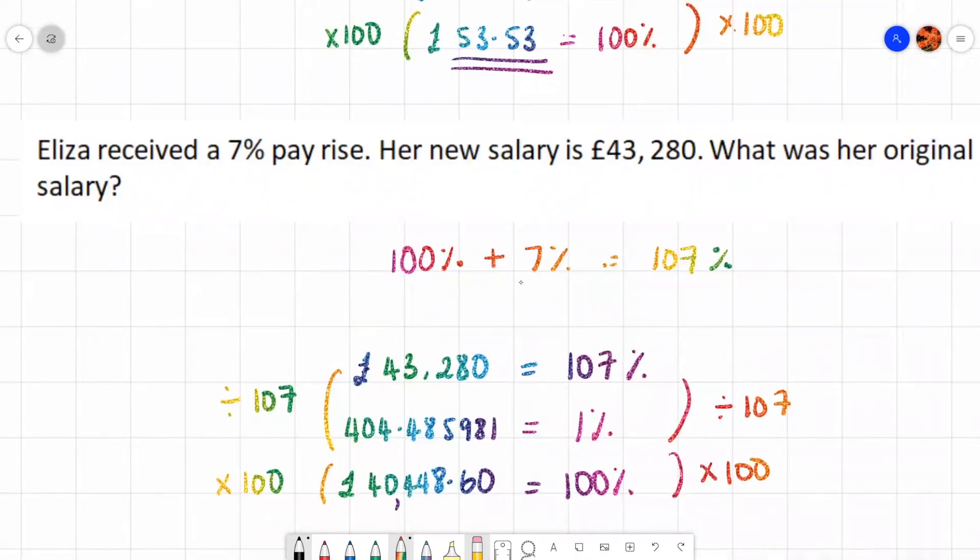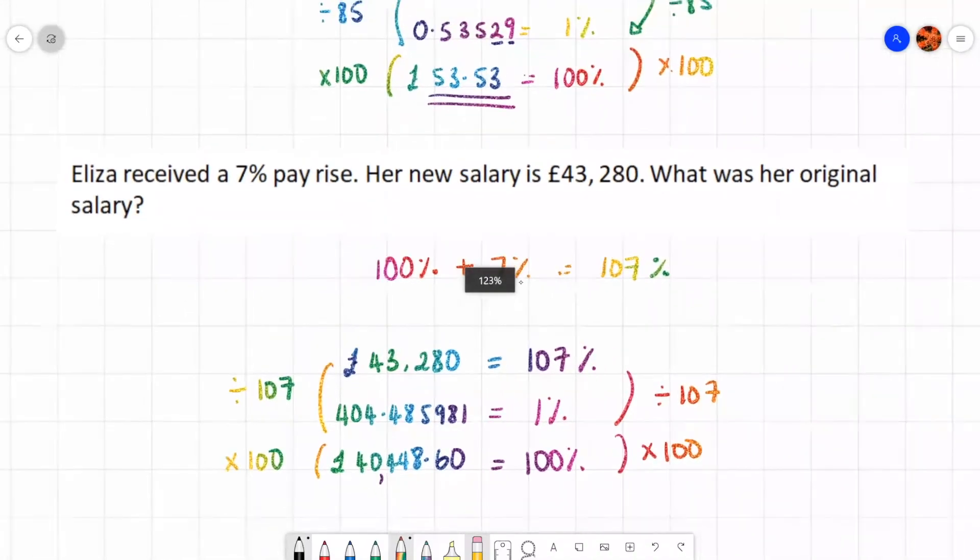So you have to think, is the question a discount question? So you're going to be taking away or is it an adding question? So they're getting a rise. That's when you add it on to 100%. That's it for today's short, quick recap on reverse percentages.